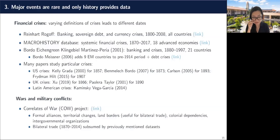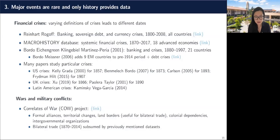One final dataset here is the Correlates of War project, which is more of a political science and political economy resource, but has really nice bilateral measures for things like formal alliances, territorial changes, and intergovernmental organizations. It's a very long panel, and when you're building up a bilateral trade panel for a gravity regression, this is a source where you can find a lot of the measures that might be useful.